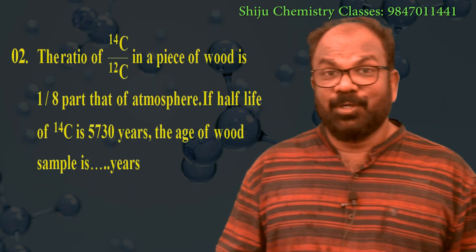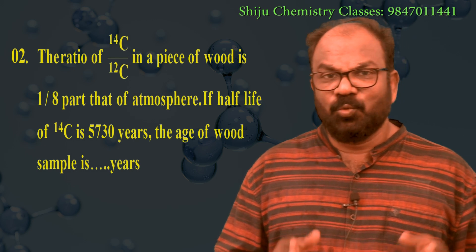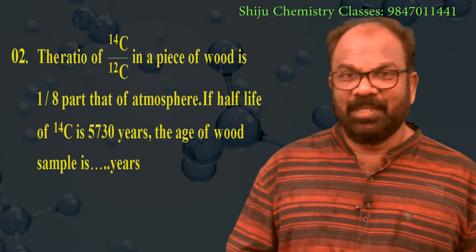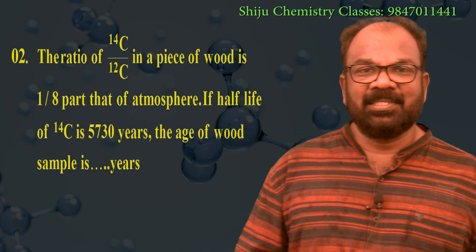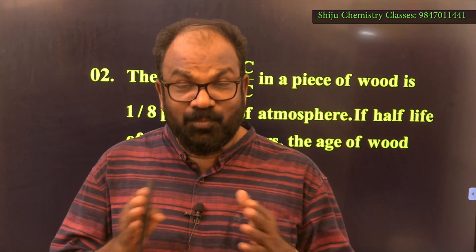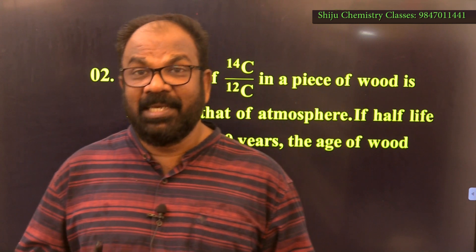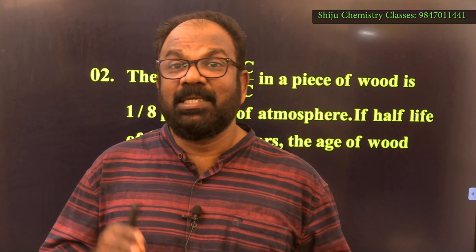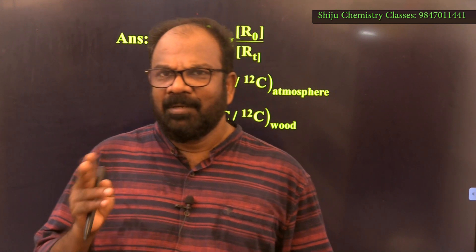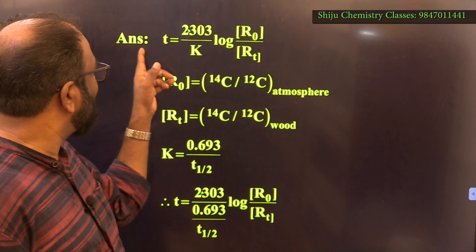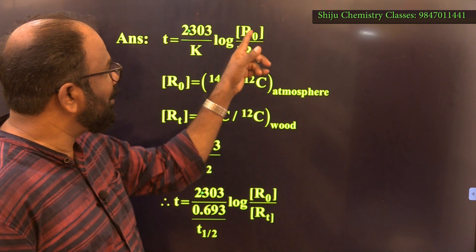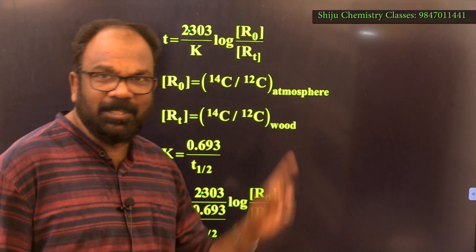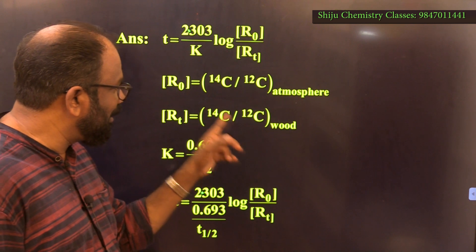Question number 2: the ratio of C14/C12 in a piece of wood is 1/8th that of the atmosphere. The half-life of C14 is 5730 years. We need to find the age of the wood sample. Since radioactivity is a first order reaction, t = (2.303 / k) × log(R₀ / Rₜ), where R₀ = C14/C12 of atmosphere and Rₜ = C14/C12 of wood.